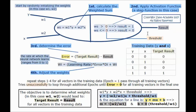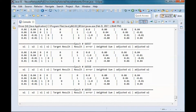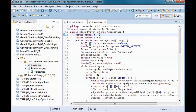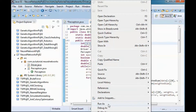We set ws equal to the threshold, so w1 times y plus w2 times x equals the threshold. This gives us the equation of a line, where m equals minus w2 over w1 and b equals the threshold over w1. Since the threshold is 0, b equals 0.